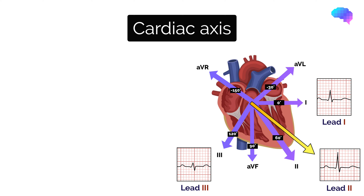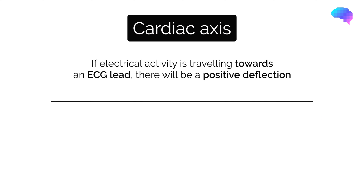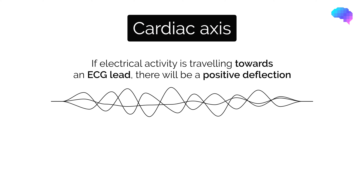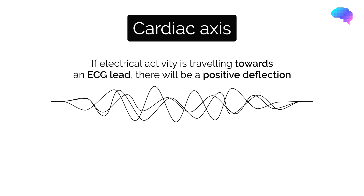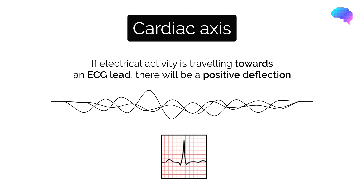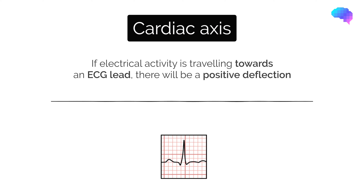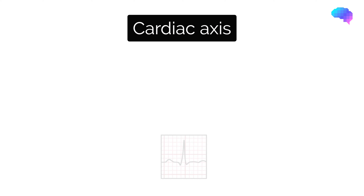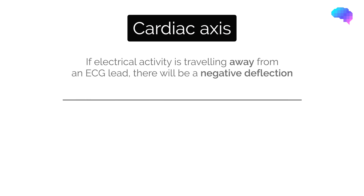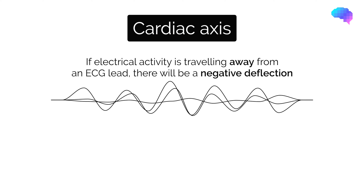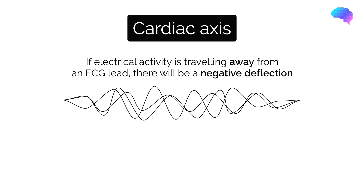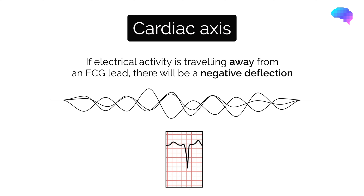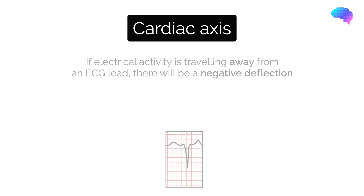There are some important concepts to understand. Firstly, whenever the net direction of electrical activity is towards a particular ECG lead, you should see a positive deflection in that lead of the ECG. Whenever the net direction of electrical activity is away from a particular ECG lead, you should see a negative deflection in that lead on the ECG.